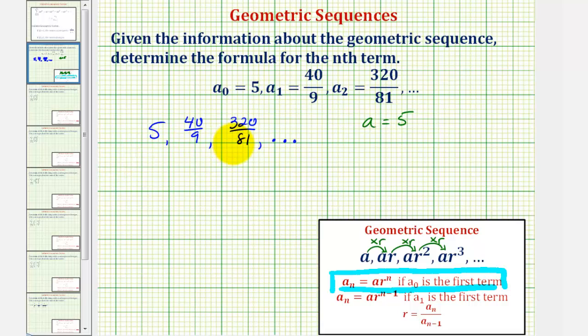If we want to analyze the sequence to find r, since these two terms are in fraction form, we want to write five in fraction form as five over one. And now to help us find r, we'll look at the numerator and denominator separately. Let's begin by looking at the denominator.